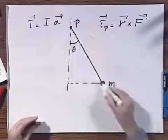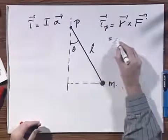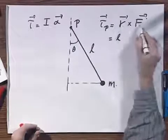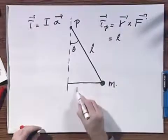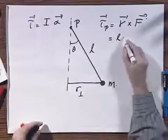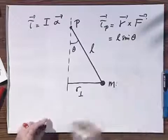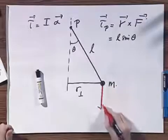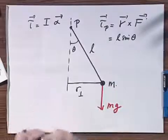What is r? That is this line that has a certain length L. So this is L. But, since I have a cross product, I have to take r perpendicular, so it is L sin θ, and I have the force, which is Mg.